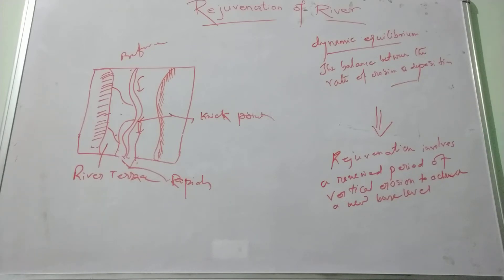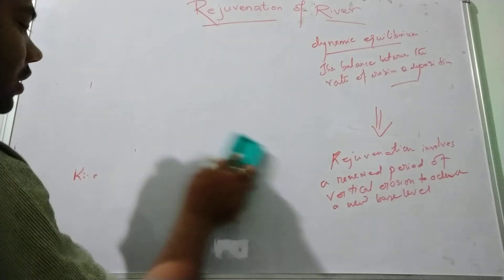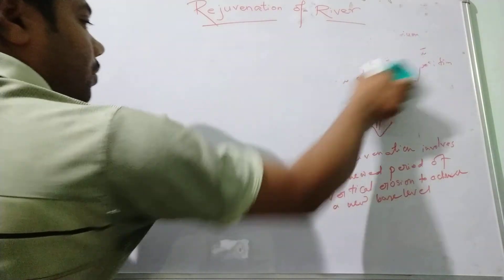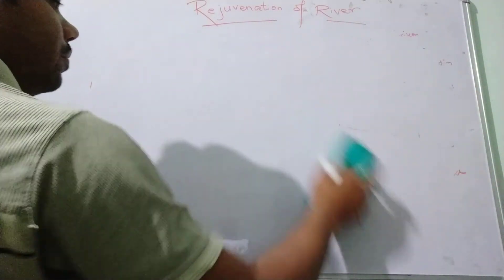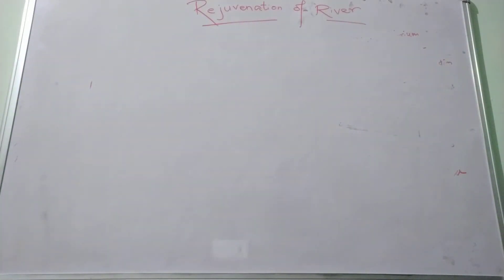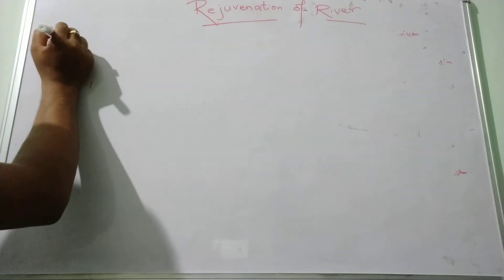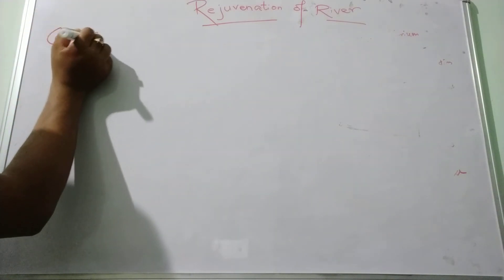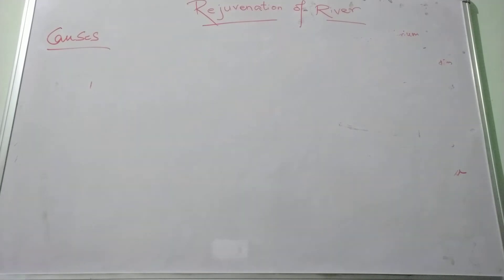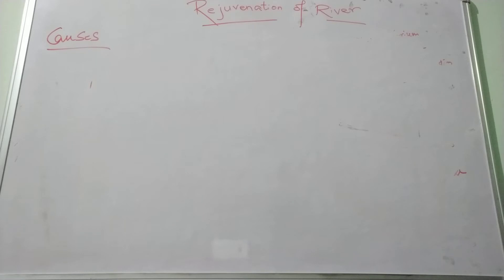There are several causes of rejuvenation. It may be dynamic, eustatic — that is changes in the base level — or isostatic, that is the state of gravitational equilibrium between the upthrust and the mantle.